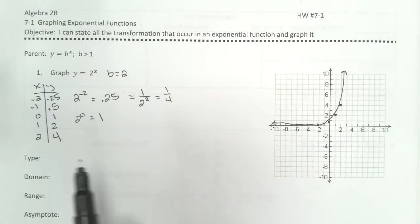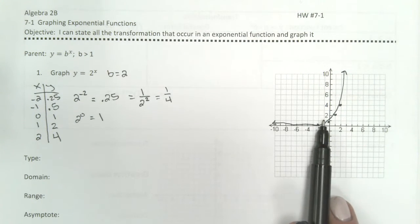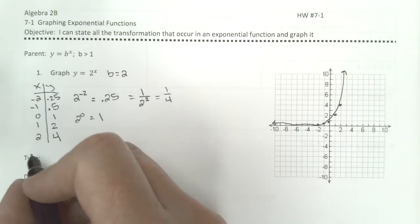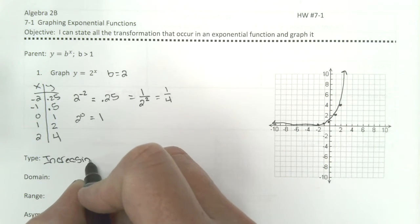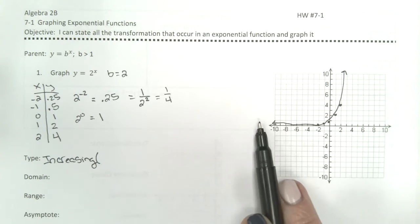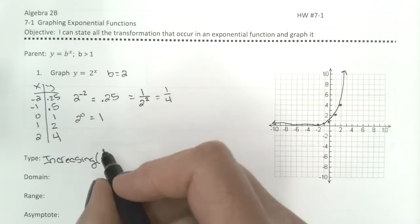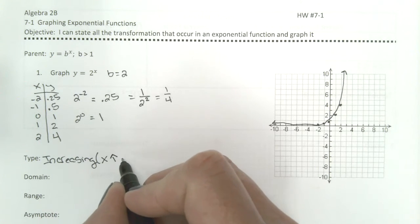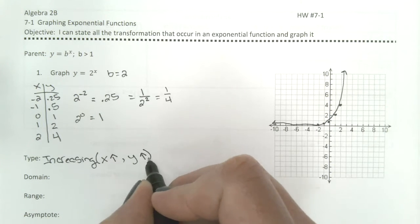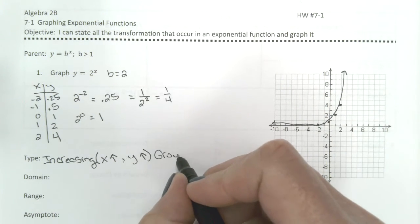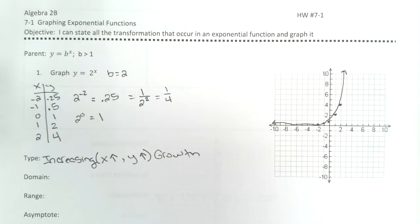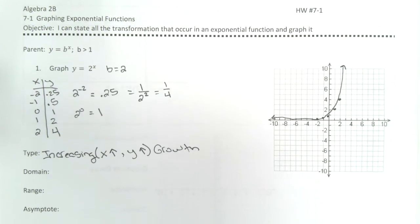For type, this graph is increasing in value. We always read a graph from left to right, and as x gets bigger, y gets bigger, and this is what we call a growth function. This is what exponential growth looks like.